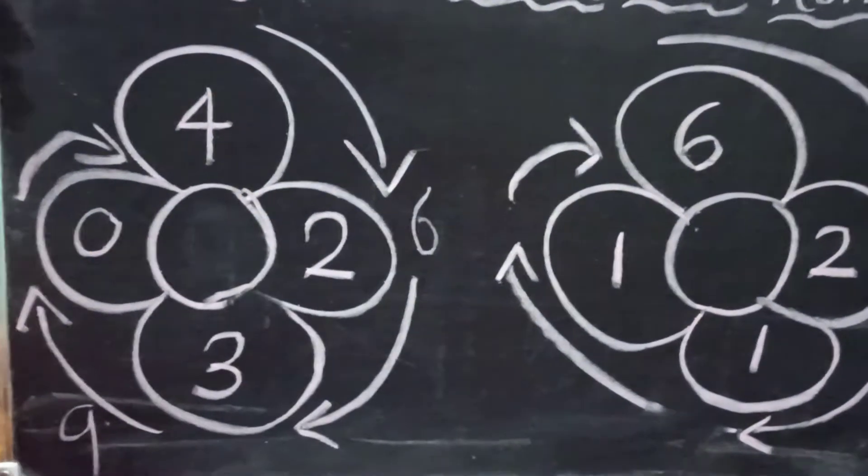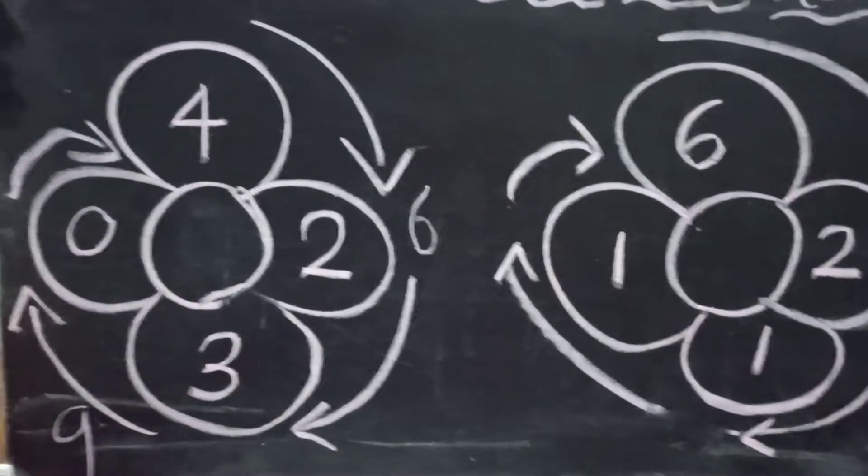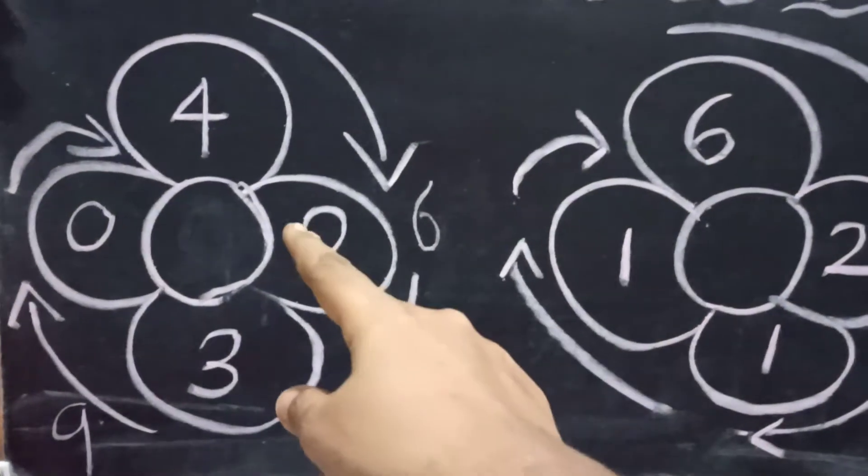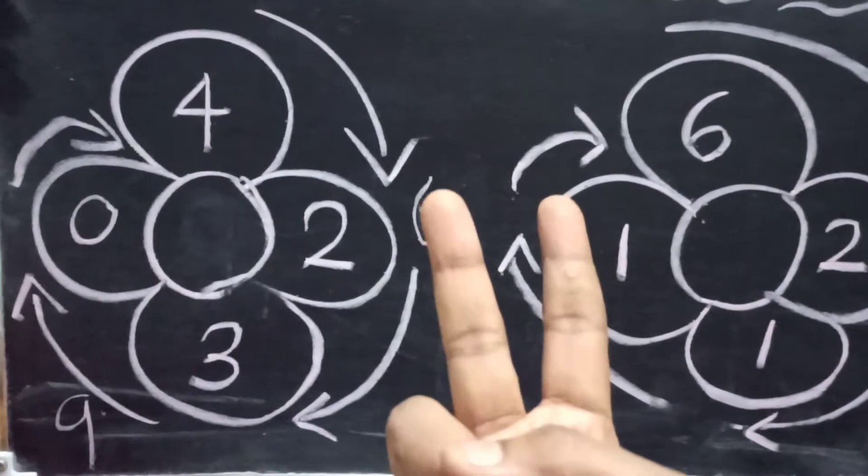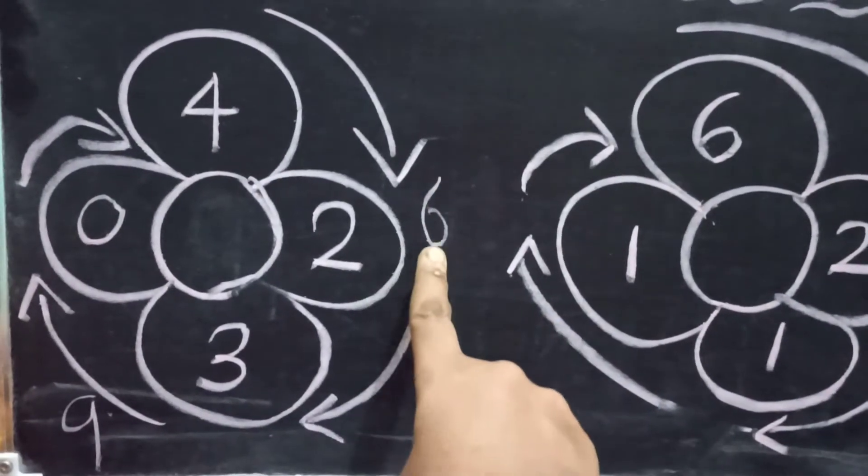So keep the four in the mind. Four in the mind, then two in the fingers. After four, five, six. So we have got six.